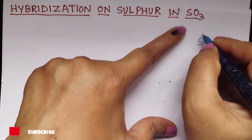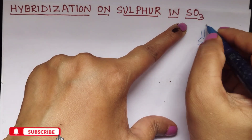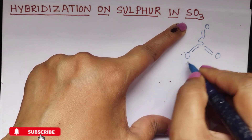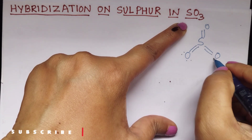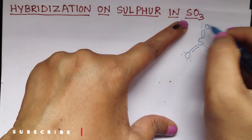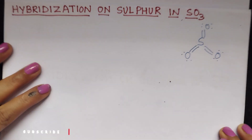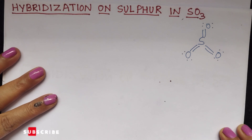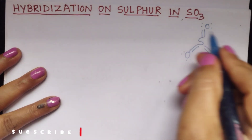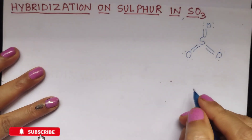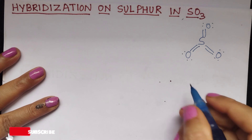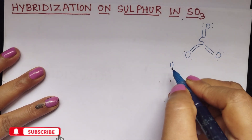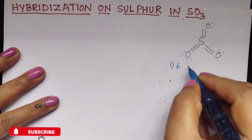The rough structure will be like this, where sulfur is the central atom attached to 3 oxygen atoms. If you see the total number of bonds formed here, they are 6, and therefore one must create 6 unpaired electrons on sulfur.